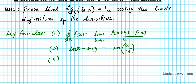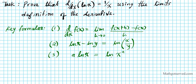Formula number three is another property of logarithms: a times the natural log of x is the same as the natural log of x raised to the power a. The reverse also holds true — you can go in either direction. Formula four is the definition of the number e: e equals the limit as x approaches 0 of (1 + x) raised to the 1 over x.